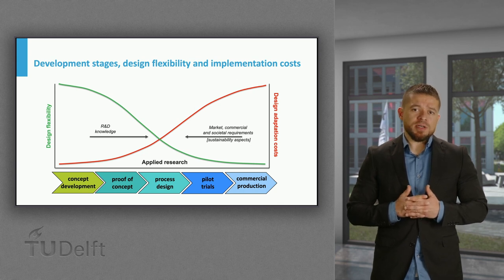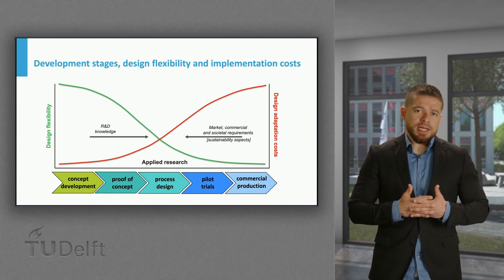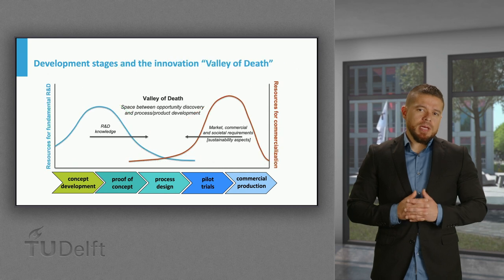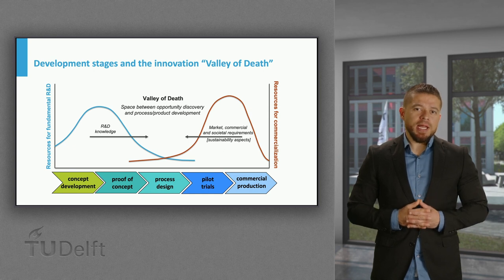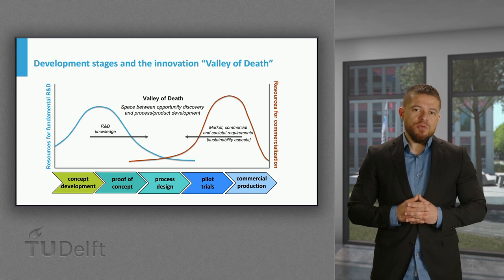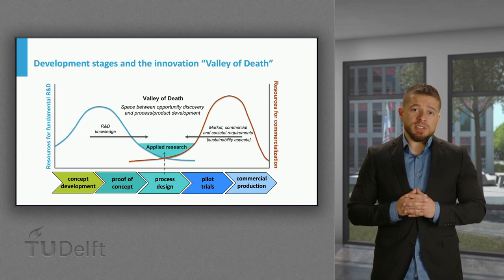This intersection between knowledge transfer from fundamental science and market demand is a well-documented bottleneck known as the innovation valley of death. This is where novel concepts are already sufficiently developed for fundamental science, but knowledge is still insufficient for direct scale-up and large-scale implementation. This leads to an inefficient use of resources and hinders the potential implementation of promising technologies. However, this gap can be bridged through collaboration and applied research where process design is central.